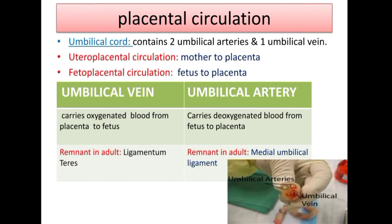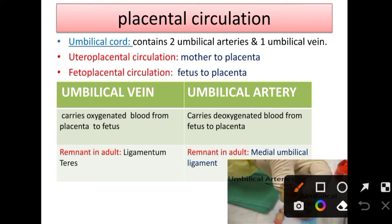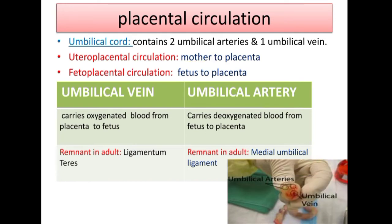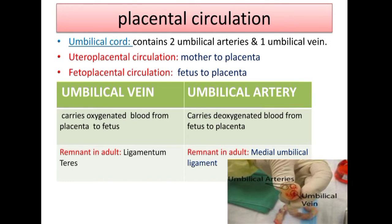There are two types of circulation: uteroplacental circulation is mother-to-placenta, and fetoplacental circulation is fetus-to-placenta. The umbilical vein carries oxygenated blood from the placenta to the fetus, and the umbilical artery carries deoxygenated blood from the fetus to the placenta. After delivery, the umbilical vein is converted to ligamentum teres and the umbilical artery to the medial umbilical ligament.